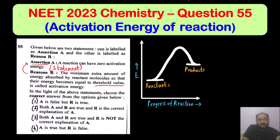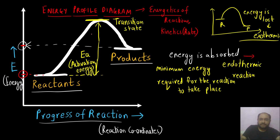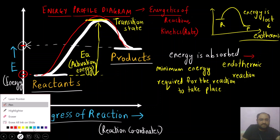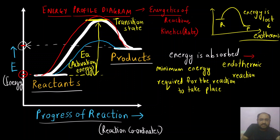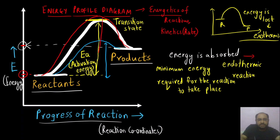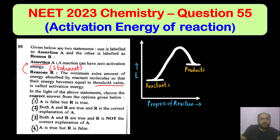The assertion states that a reaction can have zero activation energy — this is incorrect. All reactions have some activation energy. You can have a higher activation energy like the red one, or a lower activation energy like the blue one, but activation energy can never be equal to zero. There will always be some amount of energy required for any reaction to take place. So our assertion is a false or incorrect statement.